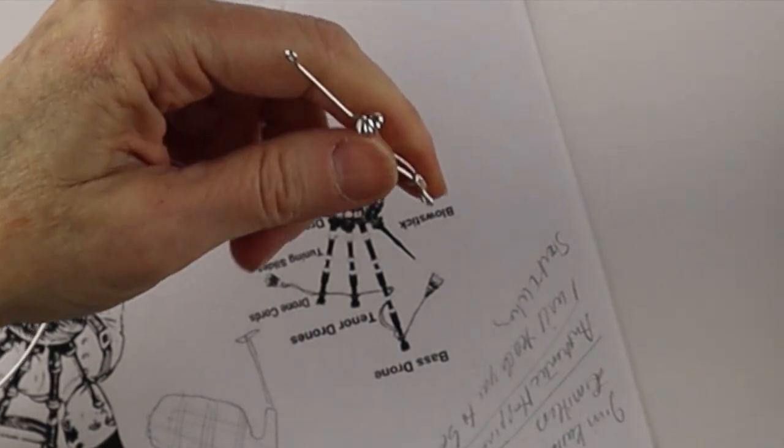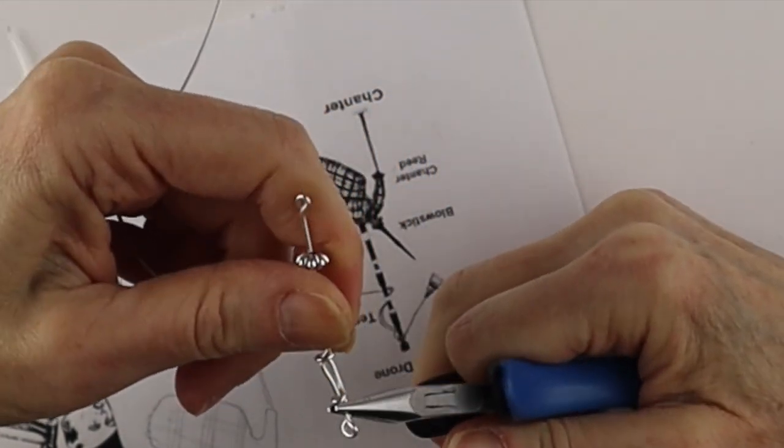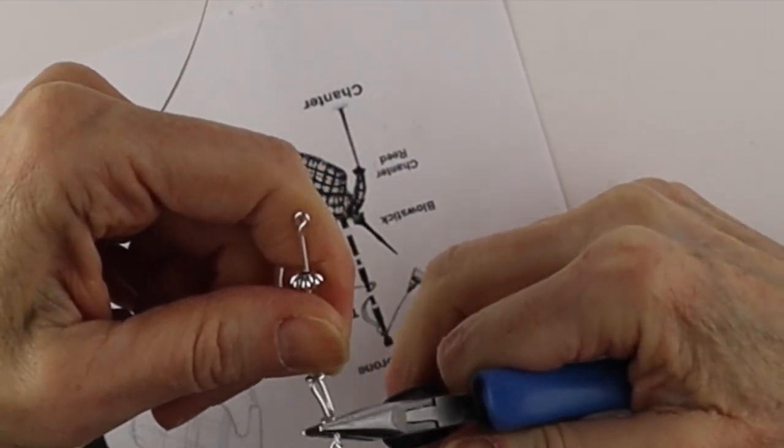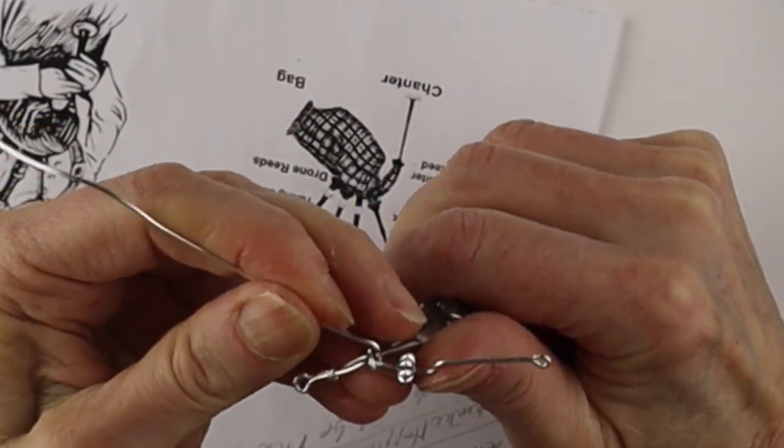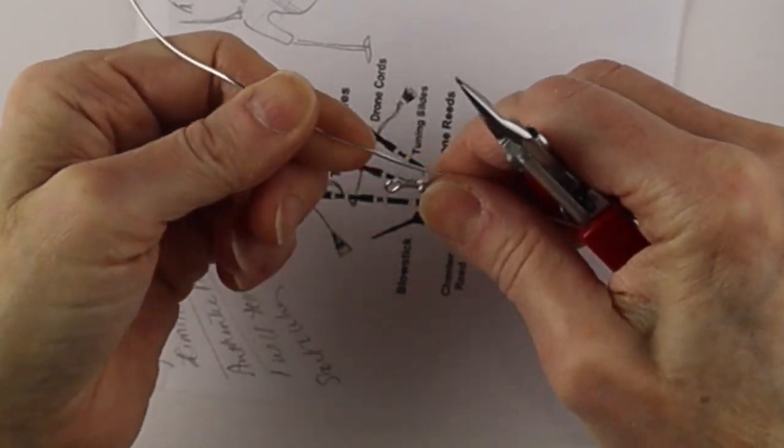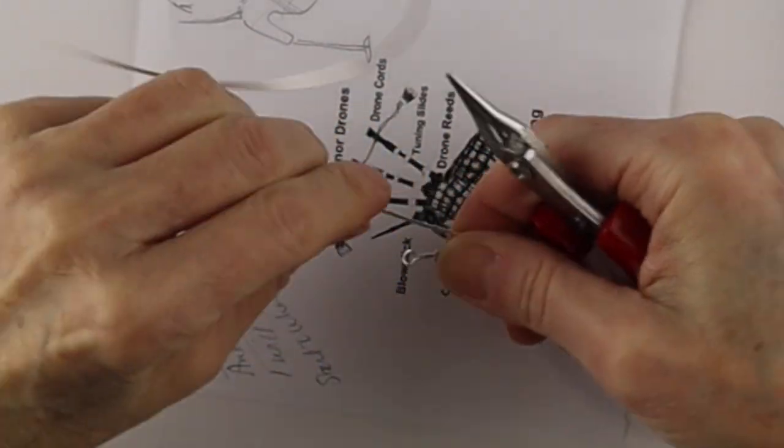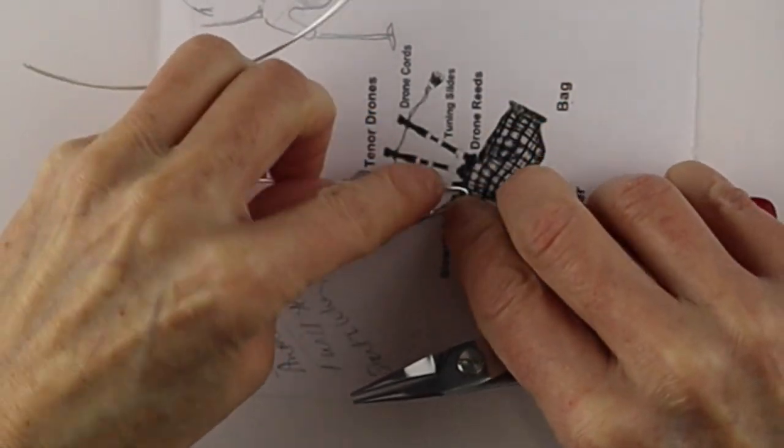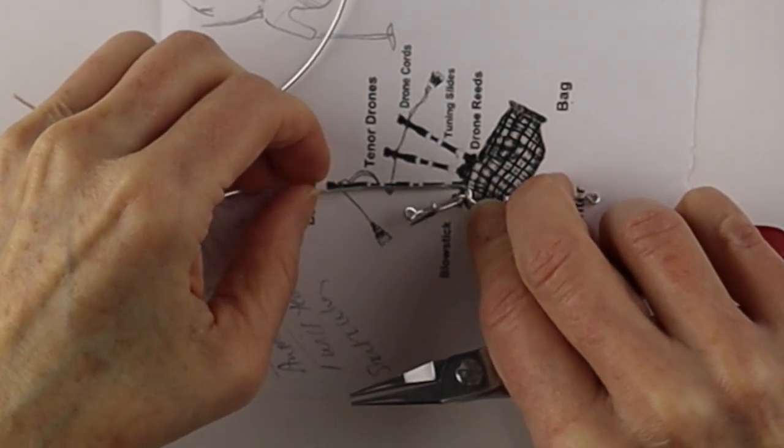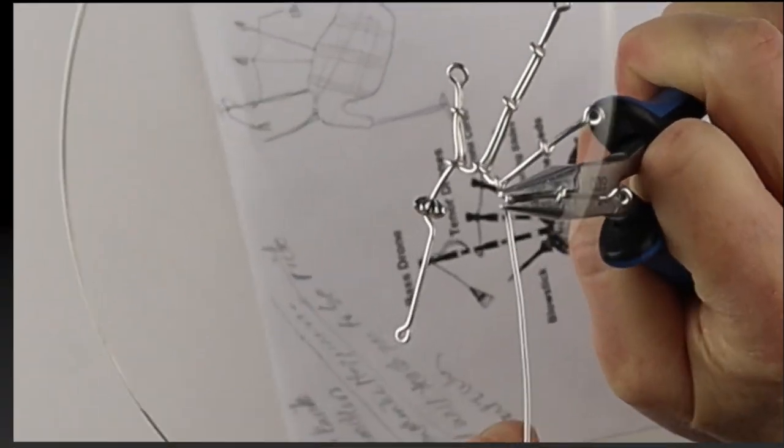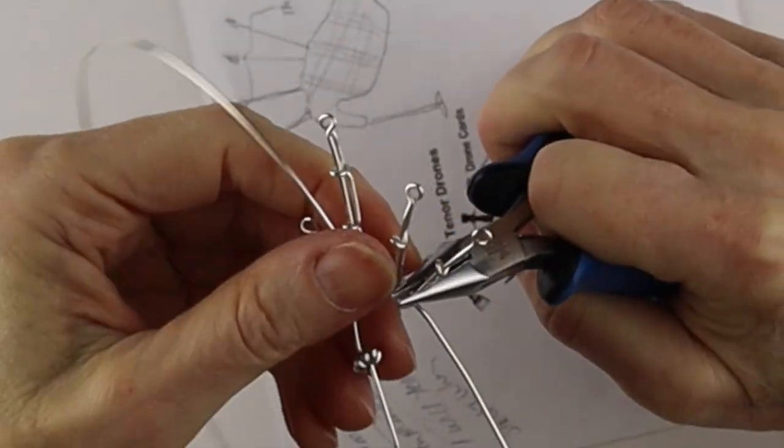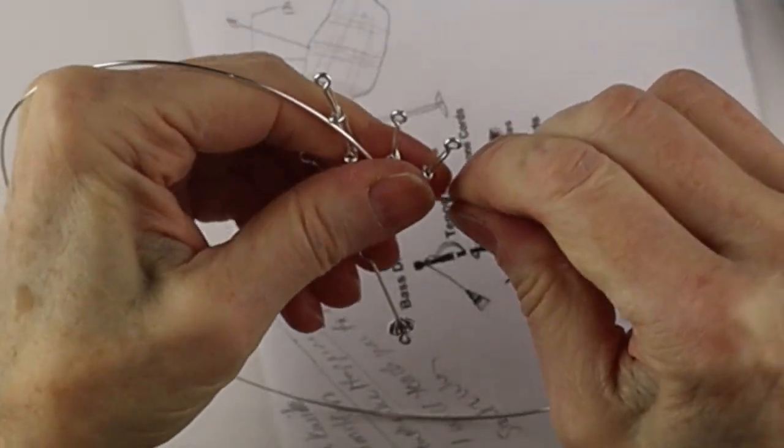We're going to keep going with this, follow the diagram and do the base drone, and then we're going to do the other drones after that. We'll hold it against the diagram to measure the length of everything, and then with the flat pliers we'll do the little connections and bring it around.